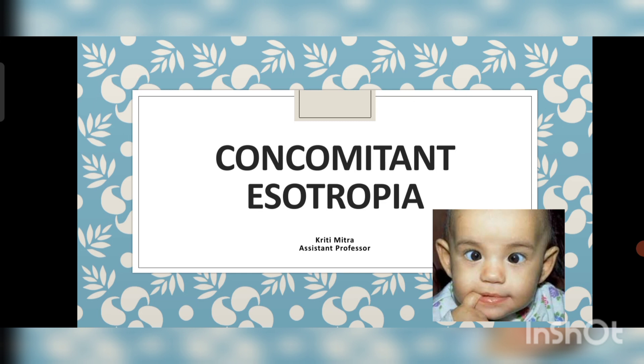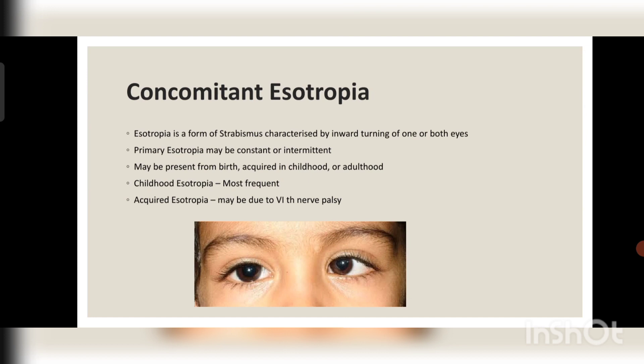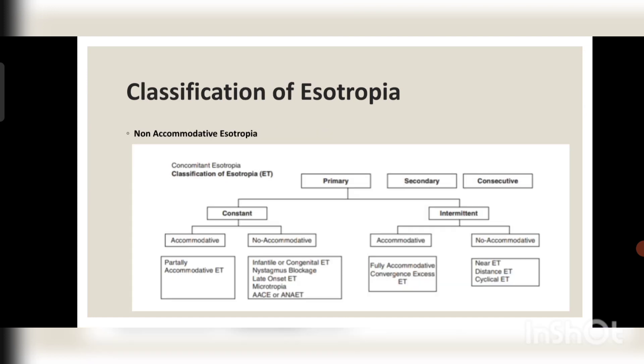Esotropia is a form of strabismus characterized by the inward turning of one or both eyes, so it can be either unilateral or bilateral. The eyeballs turn inwards. Esotropia may be constant or intermittent; it may be present from birth, acquired during childhood, or acquired during adulthood. Childhood esotropia is the most frequent type. If it is an acquired esotropia, it is basically found due to sixth nerve palsy.